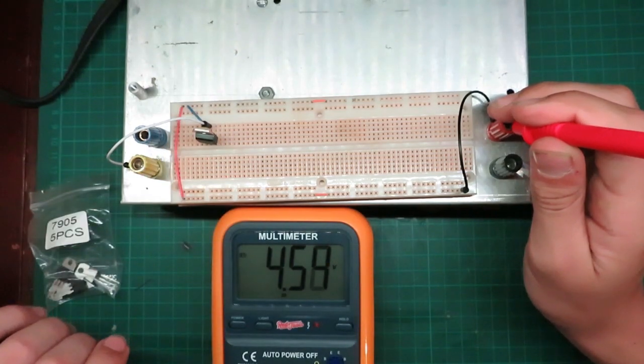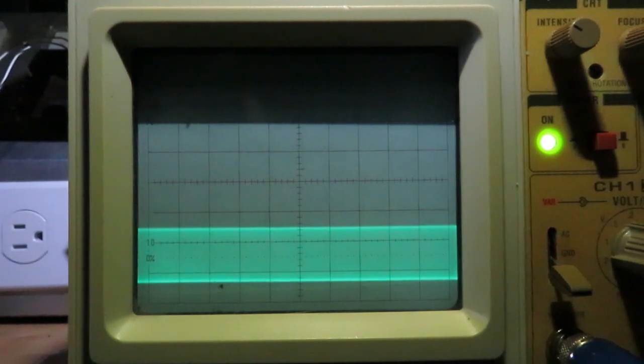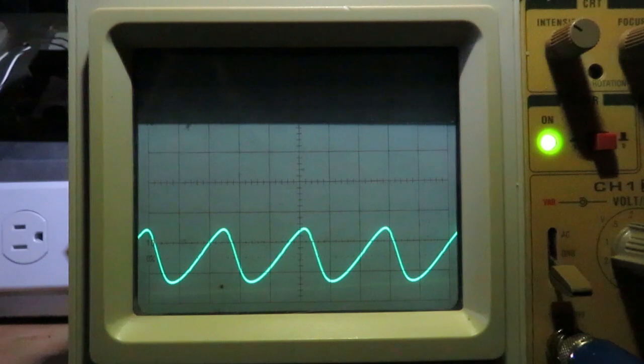Now we're going to scope the negative output on the oscilloscope screen here. Turn on the power supply. There we go. You can see there's something weird there. I'll zoom in a little bit. You see that? Why is that like that? So I'm going to try adding a capacitor and see what happens.